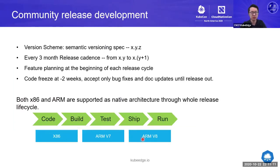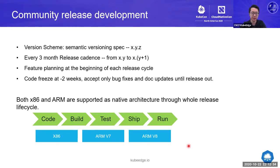For community release development, we release every three months. Feature planning starts at the beginning of each release lifecycle, and we typically freeze our code two weeks before the final release date to focus on fixing bugs and stabilizing the release. A key highlight is that on the edge, a lot of hardware is based on ARM architecture, so the KubeEdge community supports both x86 and ARM architectures natively throughout the whole release lifecycle. We have ARM-specific tests in CI and also x86 verifications.